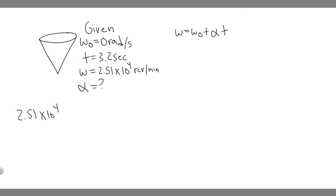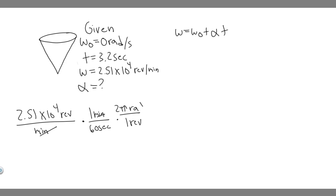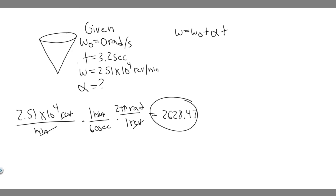We have 2.5 times 10 to the 4 revolutions per minute. First, let's get rid of the minutes: one minute equals 60 seconds, which cancels out the minutes. Then we get rid of revolutions: one revolution equals 2π radians — a conversion you have to know. That cancels the revolutions, leaving radians per second. So we do (2.5×10⁴ ÷ 60) × 2π, which gives approximately 2628.47 radians per second. This is the angular velocity value we'll use.